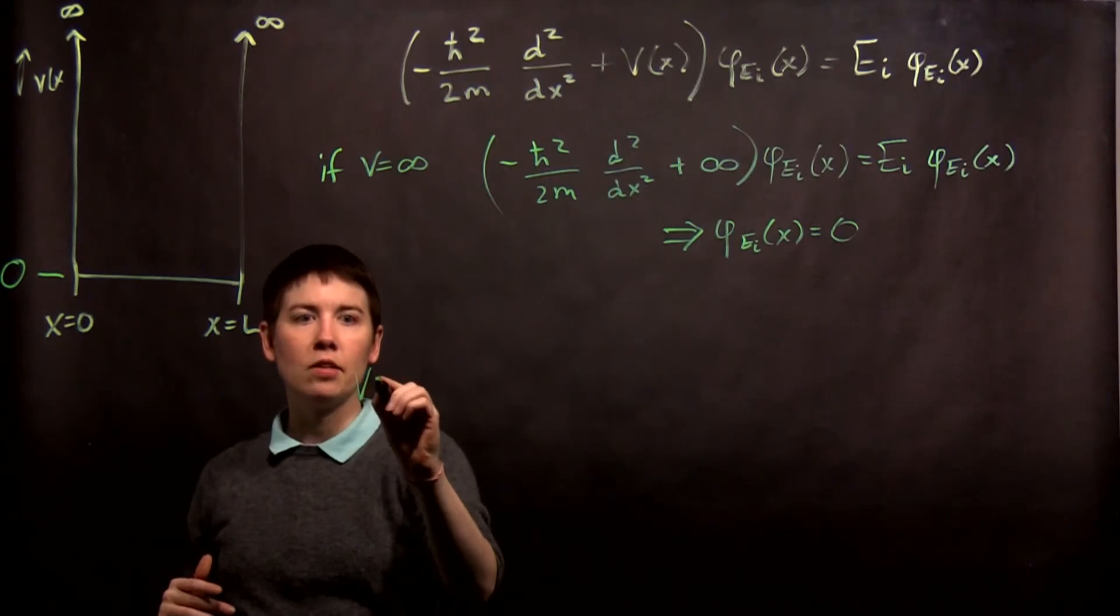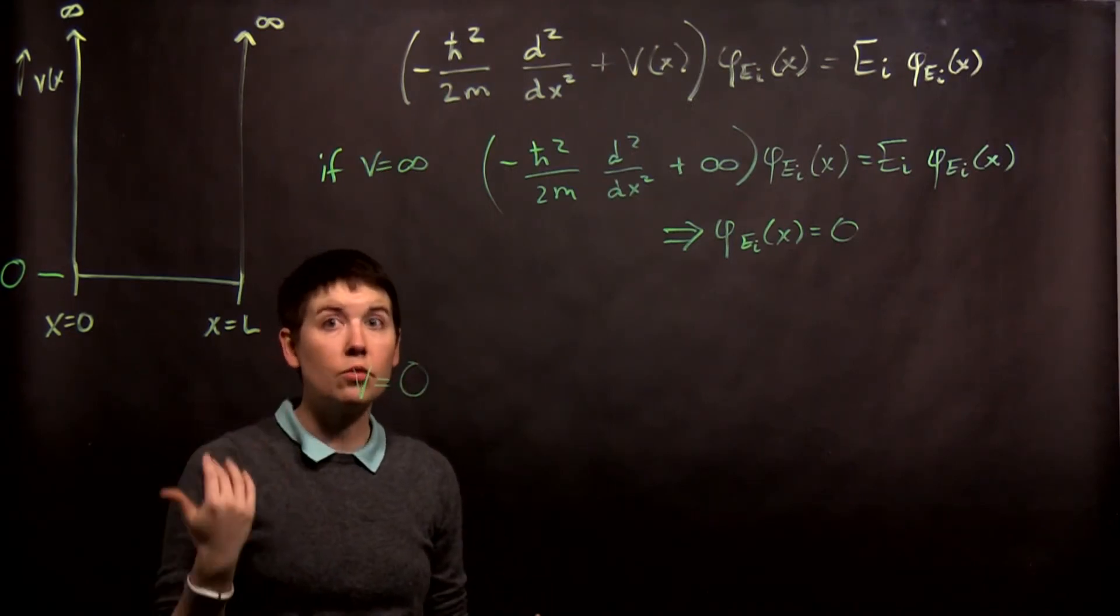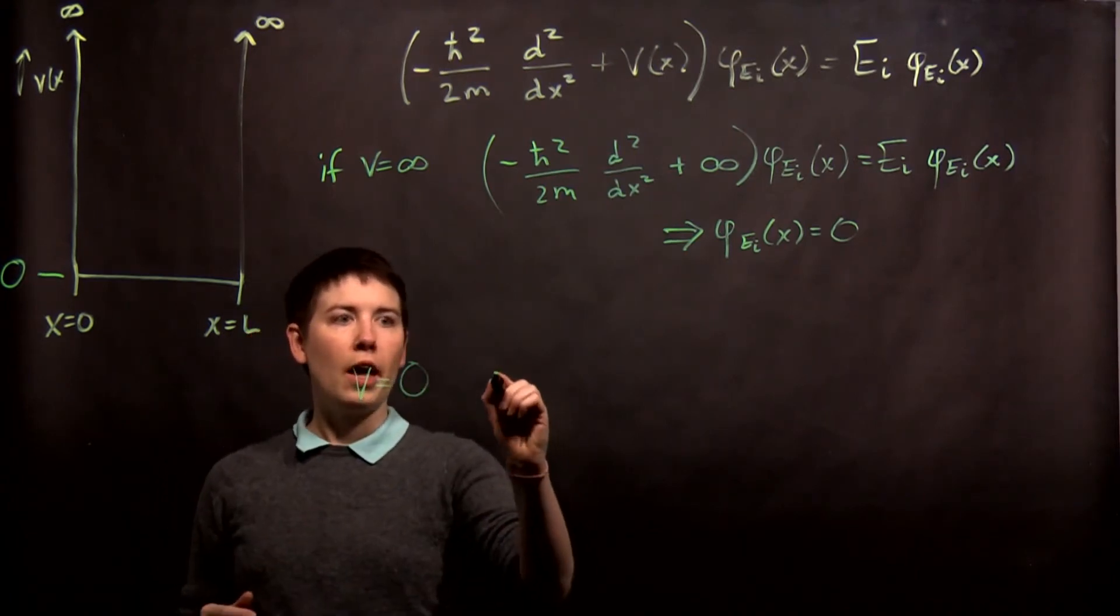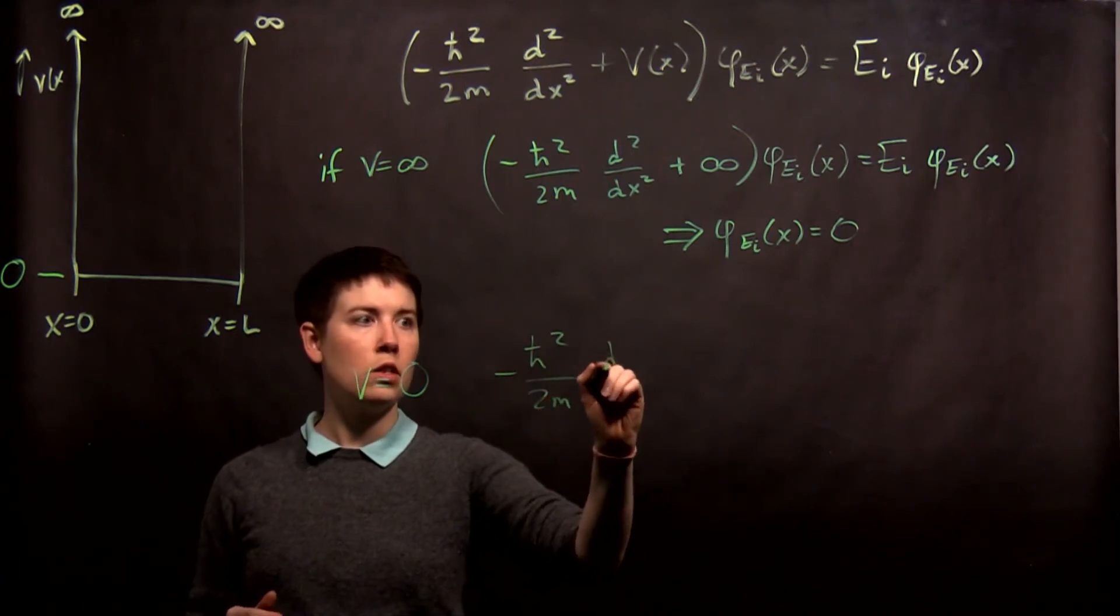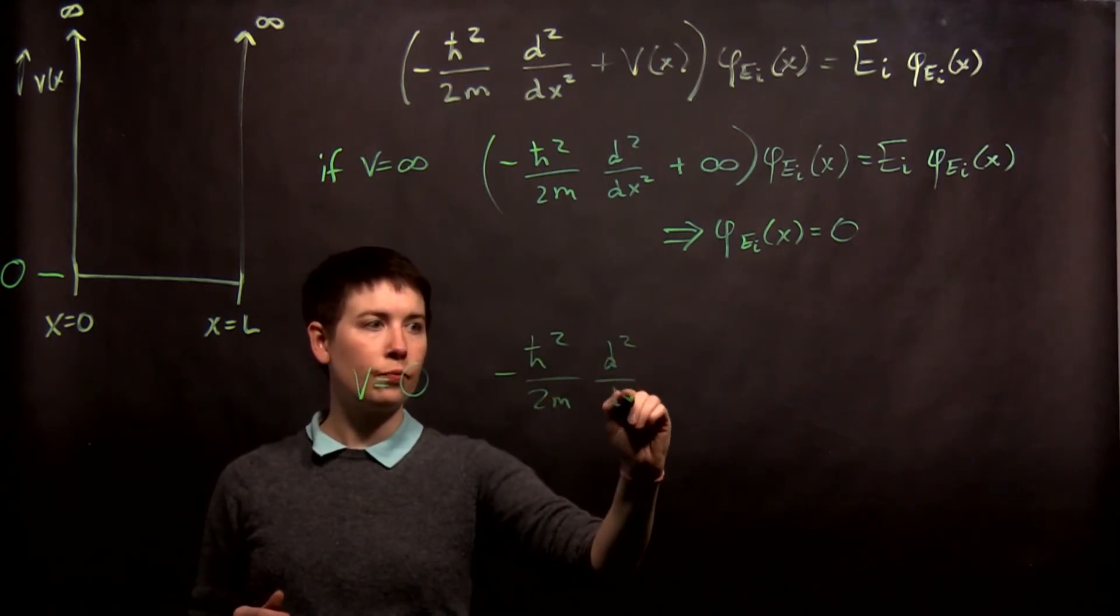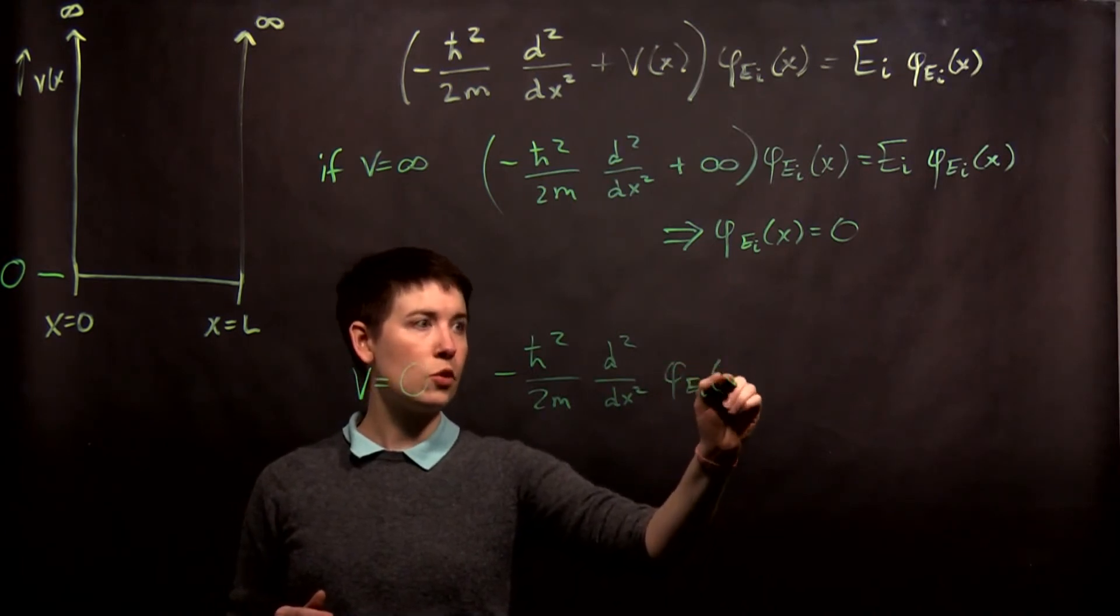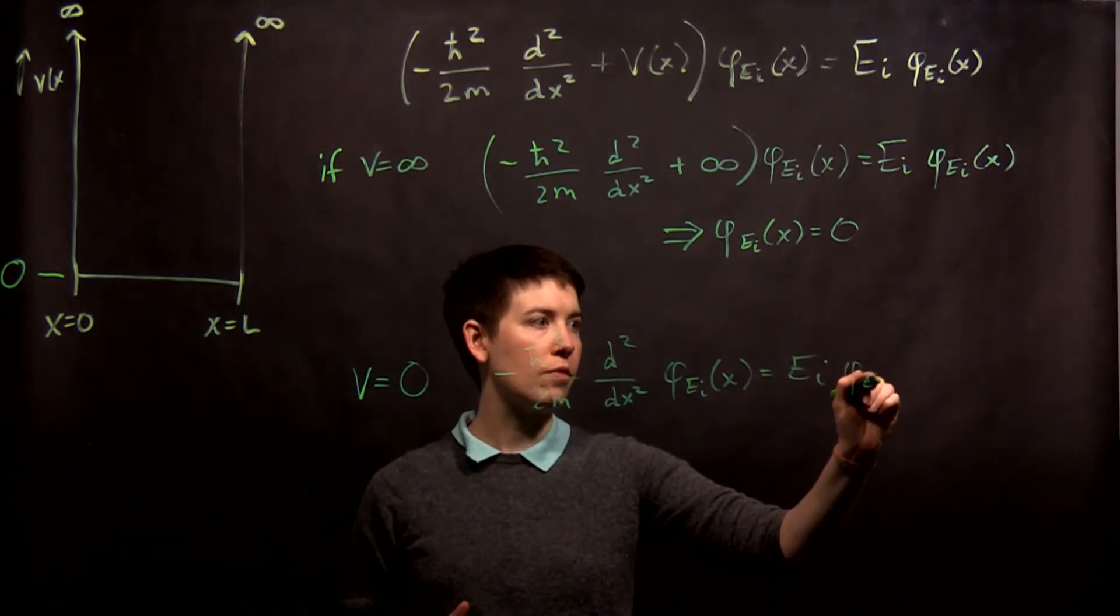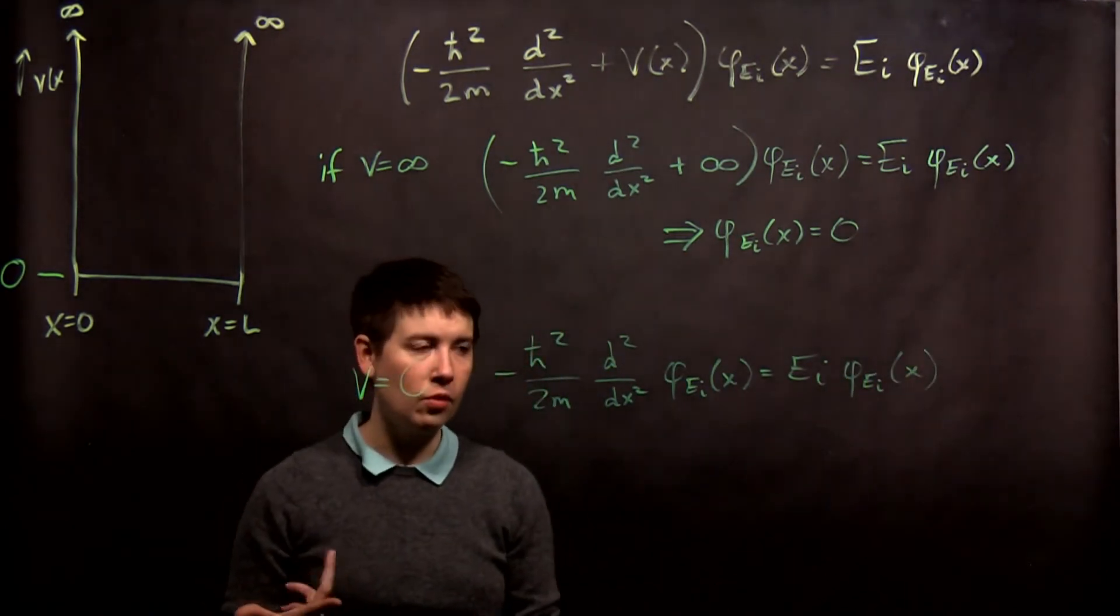Okay, now what about instead if V equals zero? We'll actually solve that in a different video for the free particle. But in this case, it's just limited. And so we get that h bar squared over 2m, second derivative of our special wave functions is then that energy and those wave functions. Okay, what form did that have?